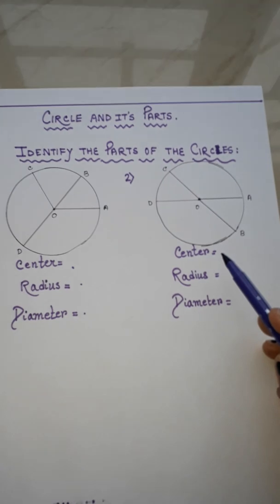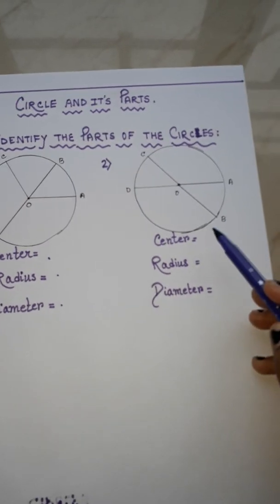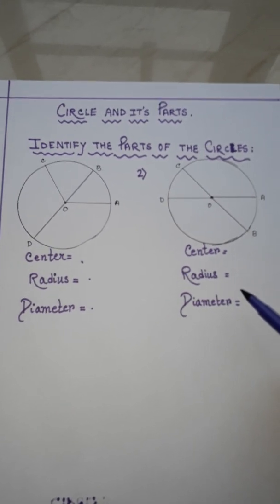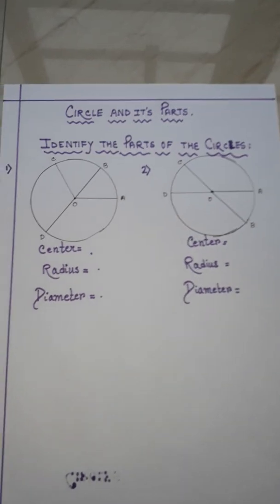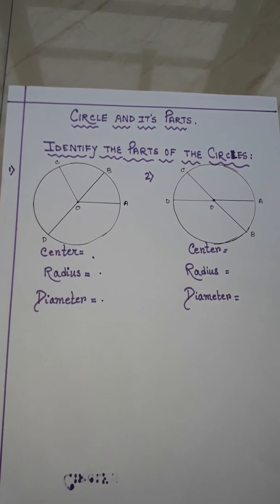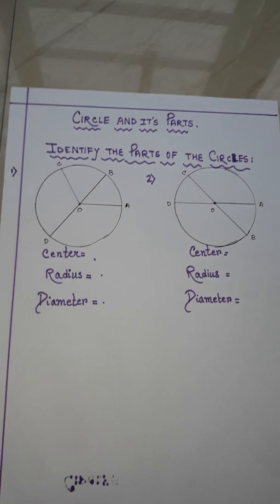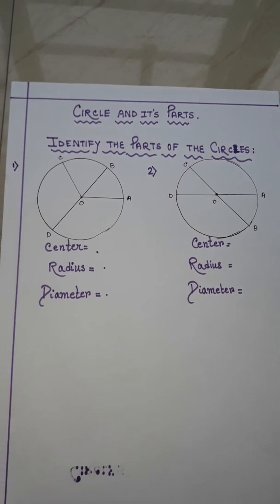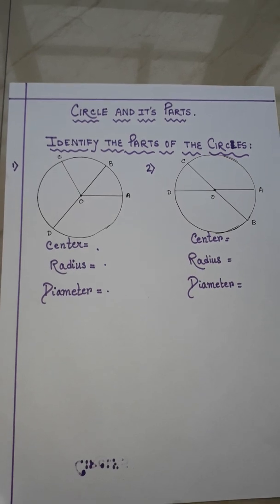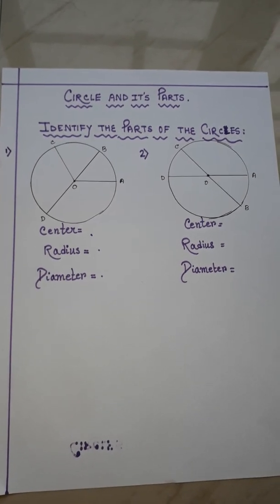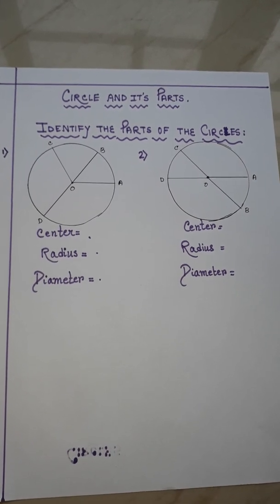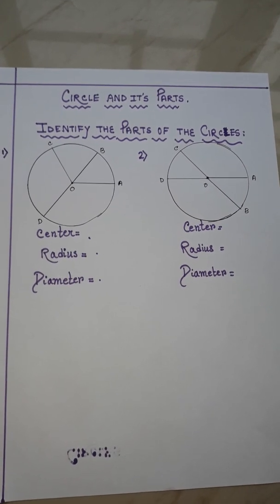Similarly, for this circle also, you have to find out center, radius, and diameter. What you have to do is, in your math copy, you have to draw the circle and after that find out the center, radius, and diameter of the circle. You can pause the video here to take a screenshot so that it becomes easy for you to note down the questions.